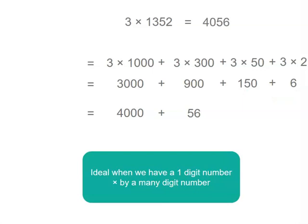Now this method's ideal when we're multiplying a huge number, like 1,352, or one with even more digits, when we're multiplying it by a single digit, like 3. This is a great way to split it up, because you can multiply lots of things by 3, or a single digit number, quite easily.